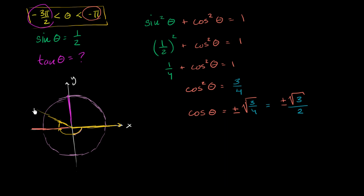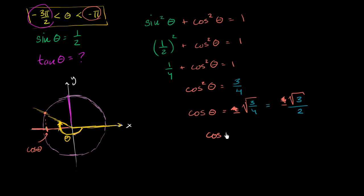Our angle theta puts us someplace over here. This arc represents the measure of angle theta. Thinking about whether cosine of theta is positive or negative, we can see it's clearly in the second quadrant. The cosine of theta is the x-coordinate of the point where our angle intersects the unit circle — and that x-coordinate is clearly a negative value. So cosine of theta is not the positive one; it is the negative square root of 3 over 2.